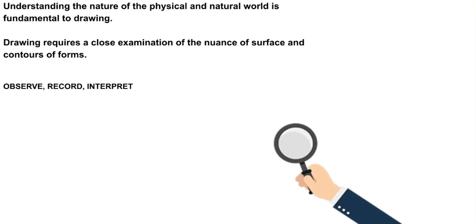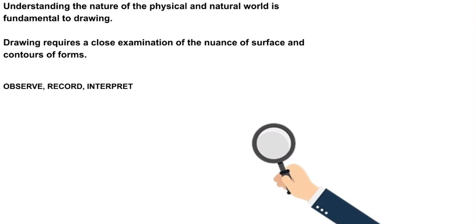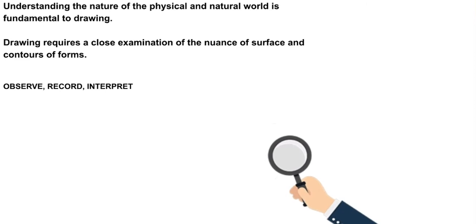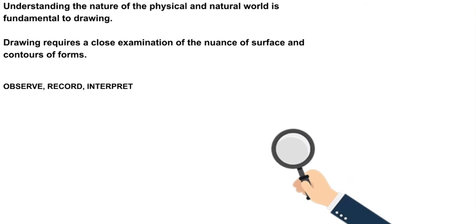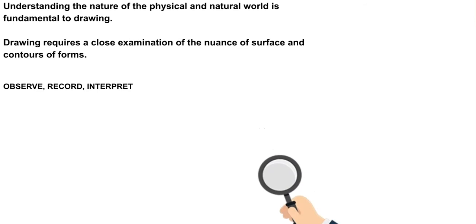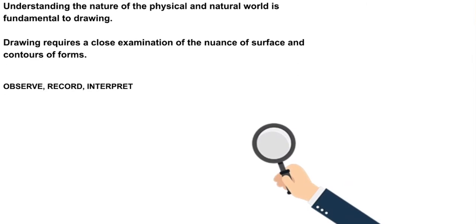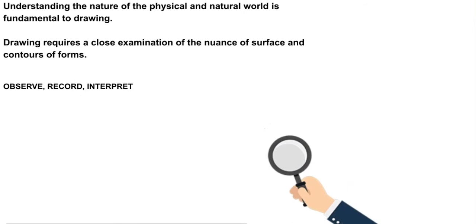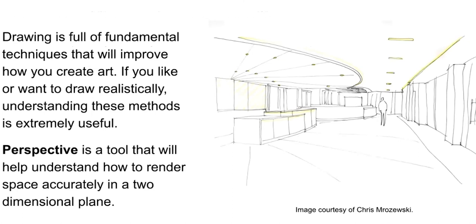Why the emphasis on observation? For artists, understanding the nature of the physical and natural world is fundamental to drawing and to art making. If you understand how light reflects off surfaces, how color can be affected by distance, it helps you render things more accurately. Drawing requires a close examination of the nuance of surface and the contours of form. When you look at something closely, you get to know it better. Every time I draw, I am engaged in observation — looking at something, recording it, even if it's a doodle or something more realistic. Then I take time to reflect and interpret what I'm doing.